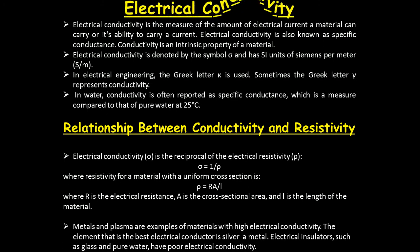Metals and plasma are examples of materials with high electrical conductivity. The element that is the best electrical conductor is silver metal. Electrical insulators such as glass or pure water have poor electrical conductivity.